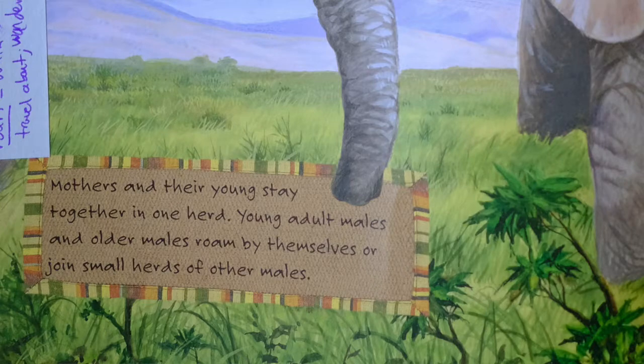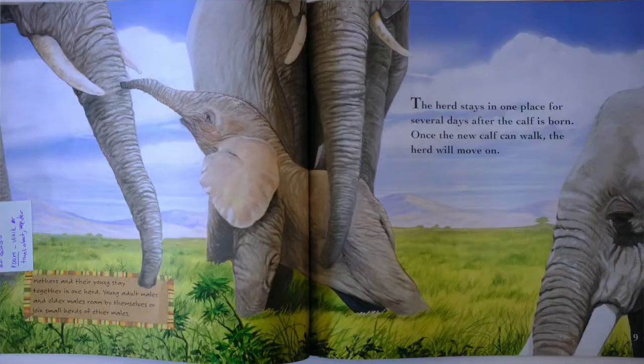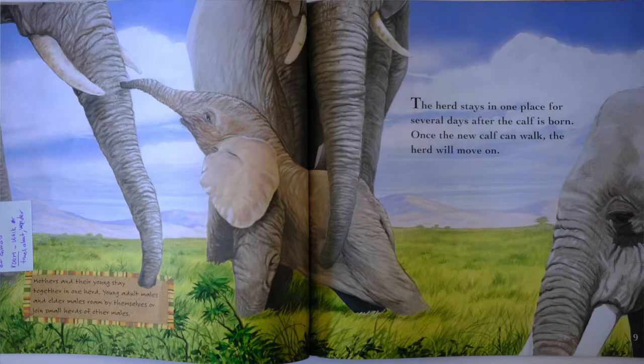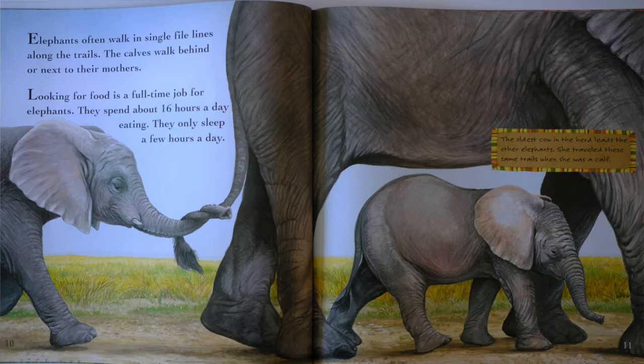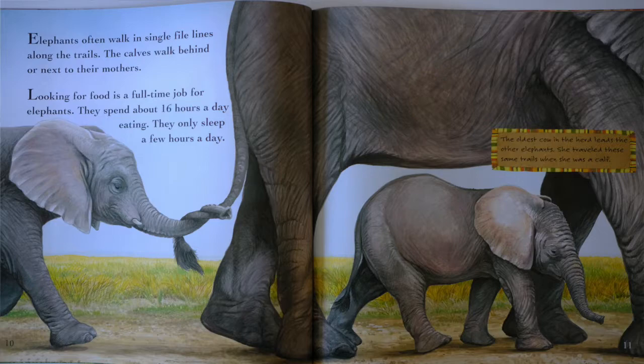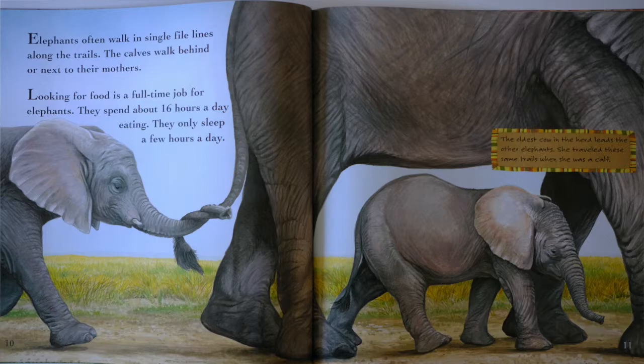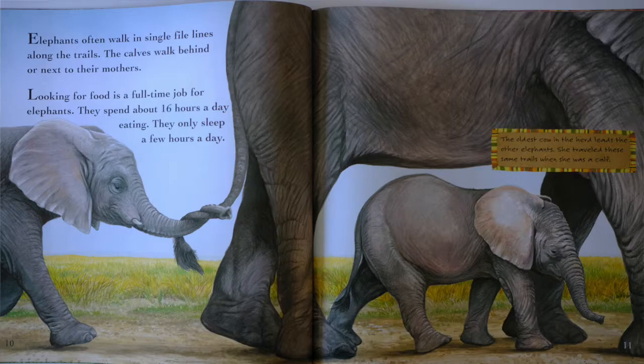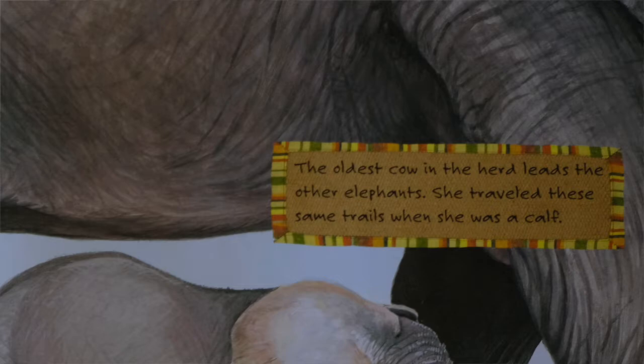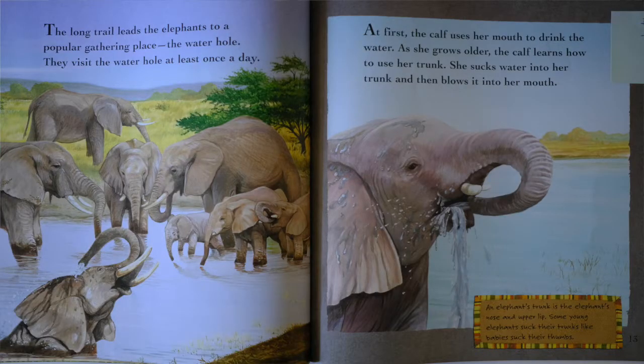Mothers and their young stay together in one herd. Young adult males and older males roam by themselves or join small herds of other males. The herd stays in one place for several days after the calf is born. Once the new calf can walk the herd will move on. Elephants often walk in single file lines along the trails. The calves walk behind or next to their mothers. Looking for food is a full-time job for elephants. They spend about 16 hours a day eating. They only sleep a few hours a day. The oldest cow in the herd leads the other elephants. She traveled these same trails when she was a calf.